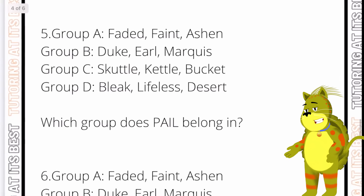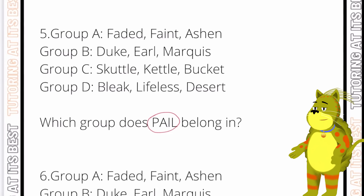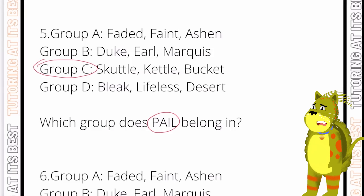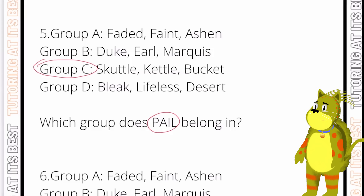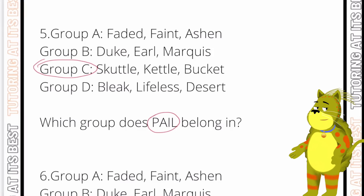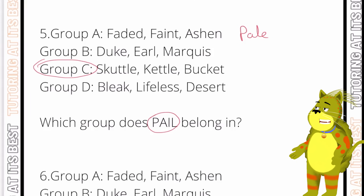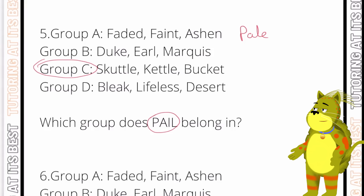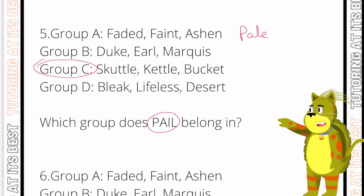Question number five: we're looking for the word 'pail'. Taking a look at all four groups, the answer is group C. Group C is made up of words which are types of containers — scuttle, kettle, and bucket — and a pail is another word for a bucket, so it belongs in group C. However, if we had the word 'pale' spelled p-a-l-e — the same pronunciation but a different spelling — it would go in group A, as that contains words which mean pale or whitened. That's a quick introduction to homophones: words that sound the same but differ in meaning or spelling.